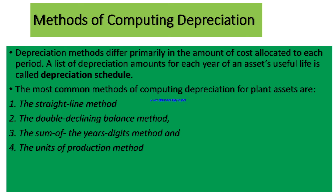When we come to methods of computing depreciation: depreciation methods differ primarily in the amount of cost allocated to each period. A list of depreciation amounts for each year of an asset's useful life is called a depreciation schedule. The most common methods are: the straight-line method, the double declining balance method, the sum of the yearly digits method, and the units of production method.